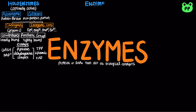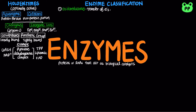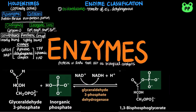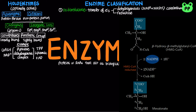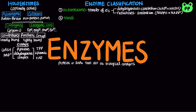Enzymes are classified into six classes by the reaction they catalyze. Oxidoreductases catalyze the transfer of electrons. The most common oxidoreductases include dehydrogenases that catalyze oxidative degradation reactions coupled to the reduction of NAD+ to NADH, as well as reductases that catalyze reductive biosynthesis reactions coupled to the oxidation of NADPH to NADP+.